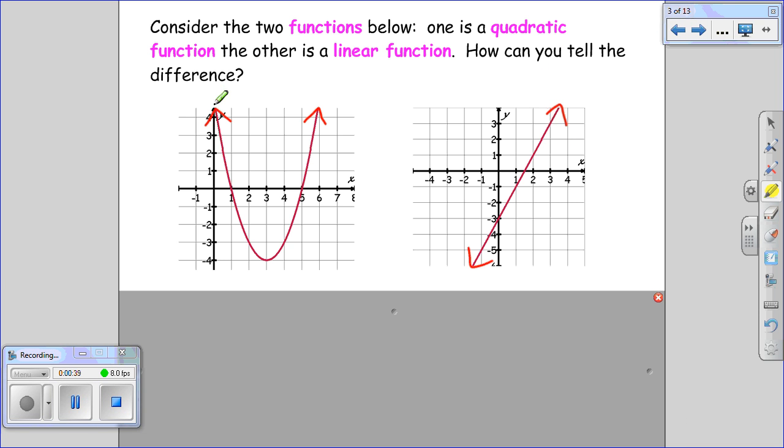How can I tell something is quadratic? If I look at this, it gives me a nice U-shaped curve. Obviously I'm not very good at tracing. It opens up or it opens down if it's quadratic.